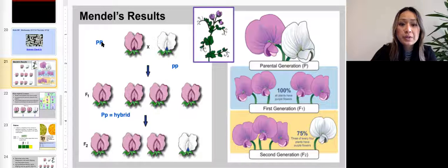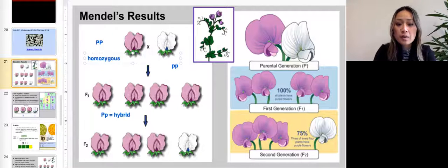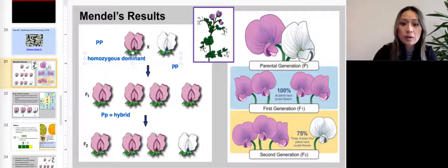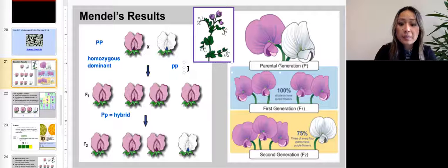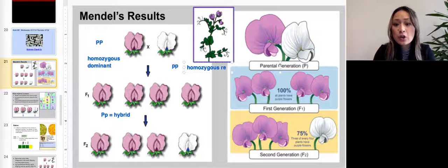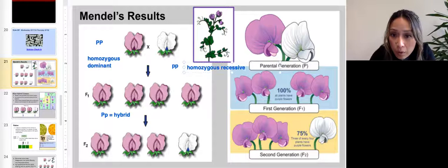The offspring are all hybrid. They're all hybrid. So pure, this one is homozygous dominant. And then the one on the right-hand side, the white one, this is homozygous recessive.